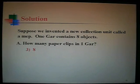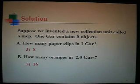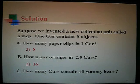Obviously, one Gare is eight, two Gares is sixteen, you're just multiplying. And then in this last situation, you divide the forty by eight to get five.